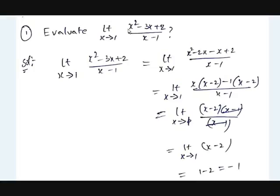To factorize x² minus 3x plus 2, multiply the first and last terms to get 2x². We need to split this so the two parts add up to minus 3x — that gives minus x and minus 2x. So we rewrite: limit x→1 of (x² minus 2x minus x plus 2) divided by (x minus 1). Taking x common from the first pair: x(x minus 2) minus 1(x minus 2). Taking (x minus 2) common gives (x minus 2)(x minus 1) divided by (x minus 1). The (x minus 1) cancels, leaving limit x→1 of (x minus 2). Substituting 1 gives 1 minus 2, which is minus 1.